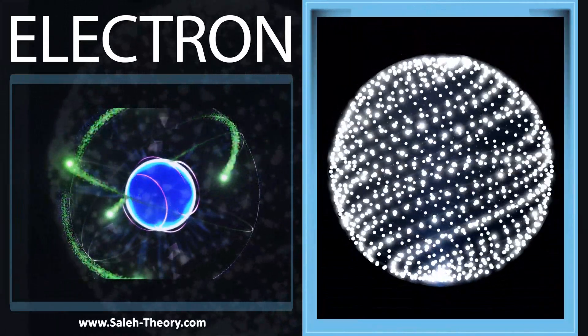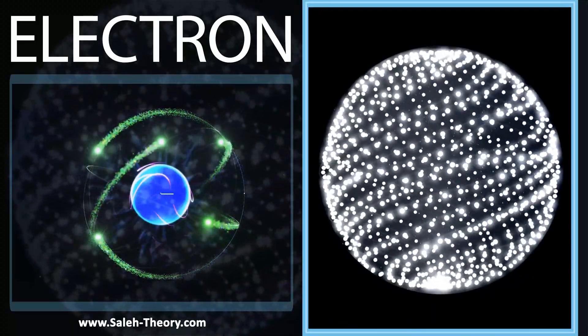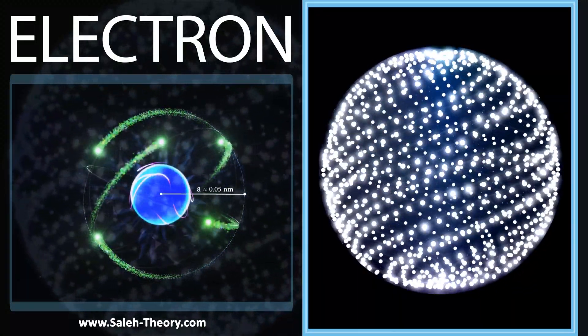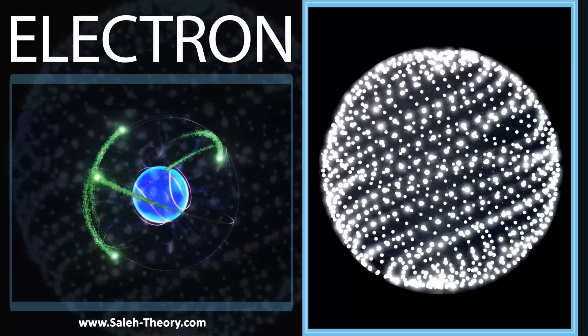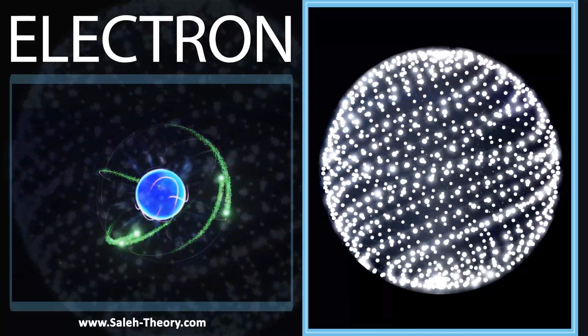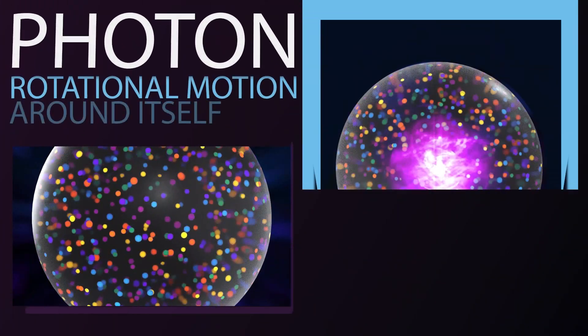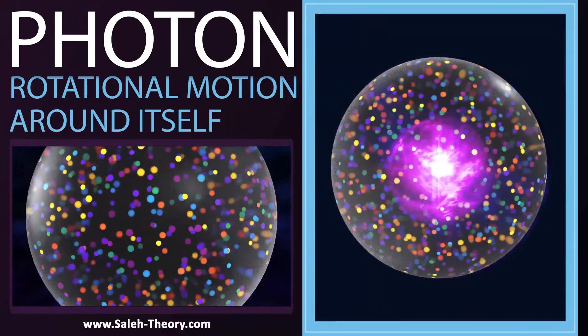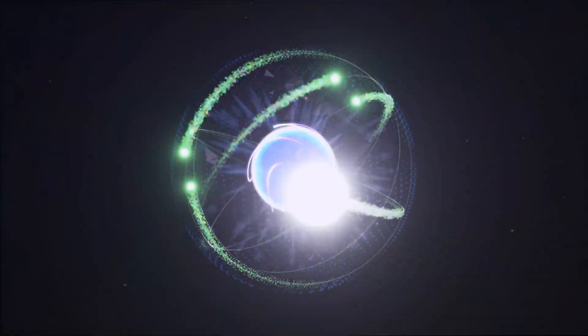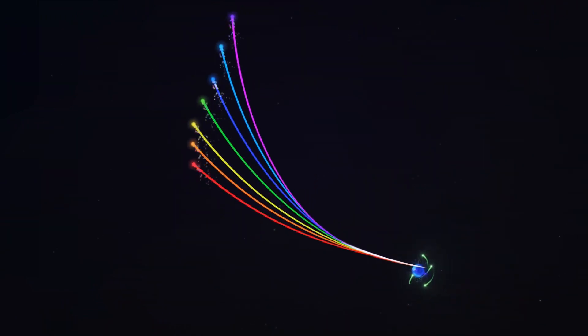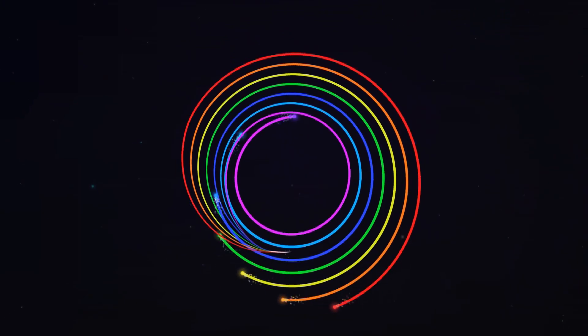Electrons usually have two main motions: the first one is around the nucleus and the other one is around themselves. On the other hand, the photon also has a rotational motion around itself. When a photon emits from an electron, its motion is the resultant of these three types of motions.